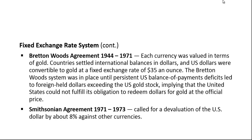The fixed exchange rate system we have used in the past comes from the Bretton Woods agreement, which lasted from 1944 to 1971, although it wasn't fully implemented until 1958. The name comes from the place where the conference was held — Bretton Woods, New Hampshire. Each currency was valued in terms of gold. Countries settled international balances in dollars, and US dollars were convertible to gold at a fixed rate of $35 an ounce. The system remained in place until persistent US balance of payments deficits led to foreign-held dollars exceeding the US gold stock.